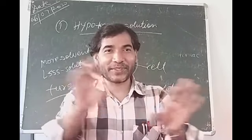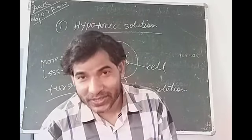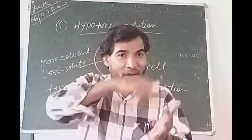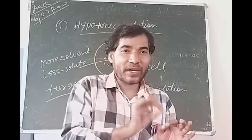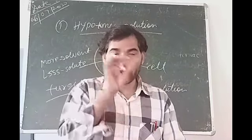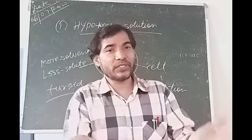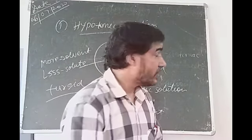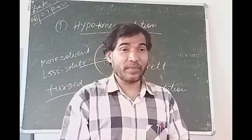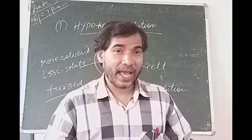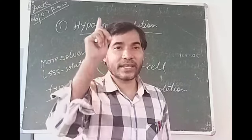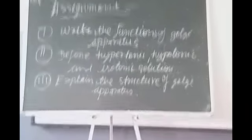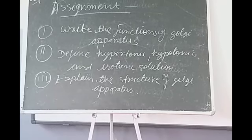For isotonic solution: a medium around the cell having the same or equal concentration of solute and solvent in comparison to the solution present in the cell is called isotonic solution. This completes the cell chapter, and from the next day we will discuss about tissue. Thank you.